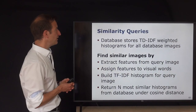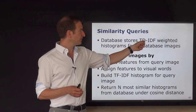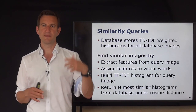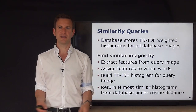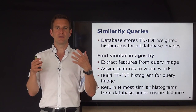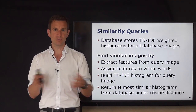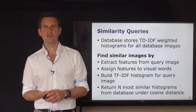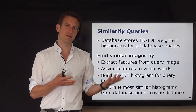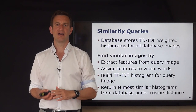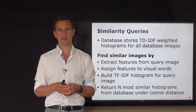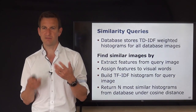To perform similarity queries: store the TF-IDF weighted histograms for all images in the database. For a query image, extract features using SIFT, assign each detected feature to the closest visual word (ignoring those too far away), build the TF-IDF weighted histogram, then compute the cosine distance to all images in the database. Return the n most similar histograms and their corresponding images. That's how the complete bag of visual words approach works.